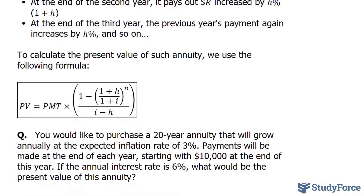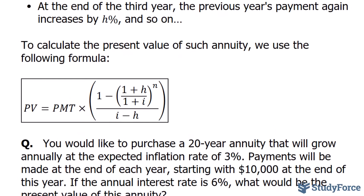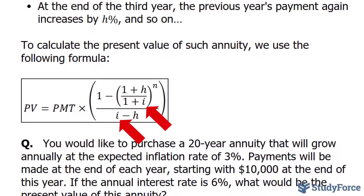To calculate the present value of such an annuity, we use the following formula. Notice that we have some repeat variables from the past. PV represents present value, PMT represents the initial first payment, I represents the interest rate per period, and N represents the total number of periods. The new variable here is H, and that represents the increase factor per period.